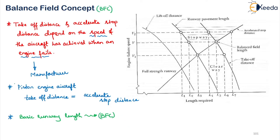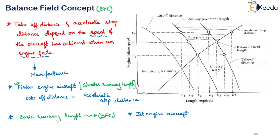Based on this concept, if we go for a piston engine, we will get a shorter runway length. And if we go for a jet engine aircraft, the engine failure is not so common and the balance field concept may not necessarily result in the most economical runway design. Here, the stopway and the clearway — which are not full strength pavement — are provided on part of the entire takeoff distance.